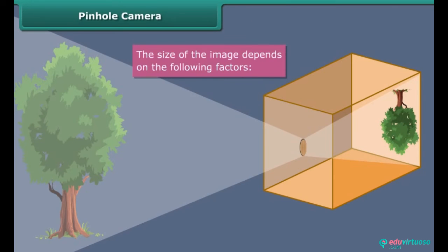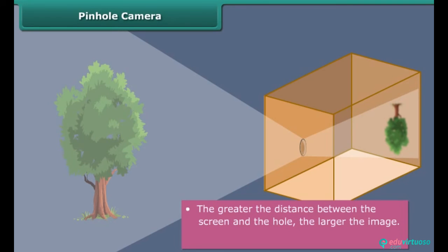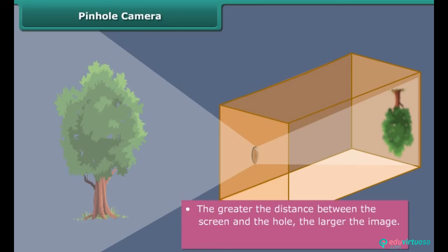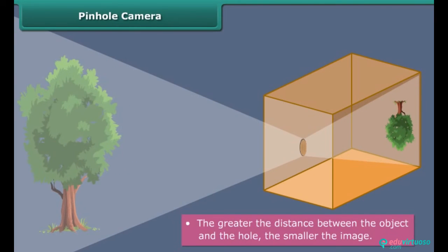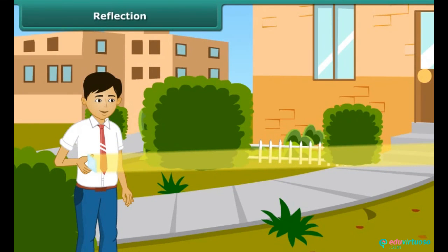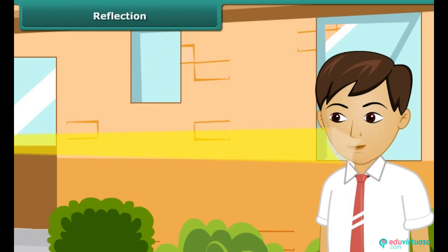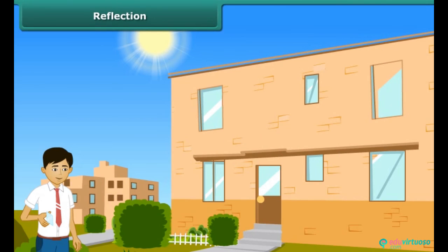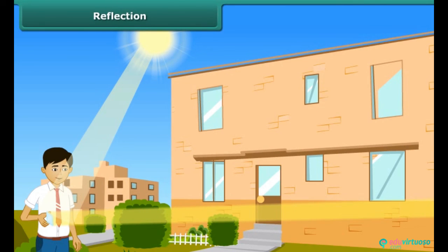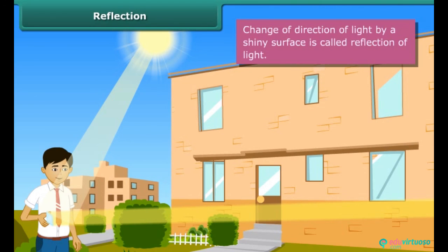The size of the image depends on the following factors: the greater the distance between the screen and the hole, the larger the image — but the larger the image, the fainter it is. The larger the distance between the object and the hole, the smaller the image. Back at school during recess, Aman shone a bright light on your face using a mirror. He used the mirror to deflect the sunlight in your direction. This proves that a mirror changes the direction of light that falls on it. Such a change of direction of light by a shiny surface is called reflection of light.